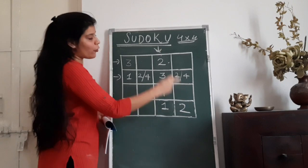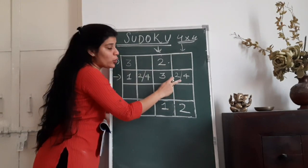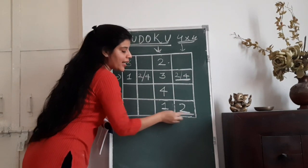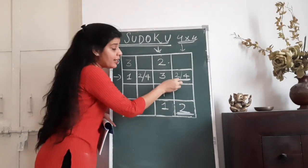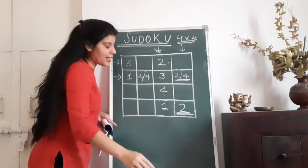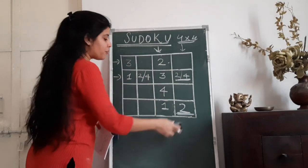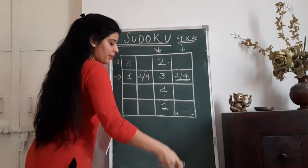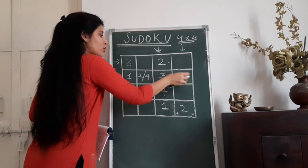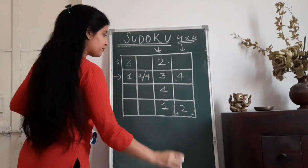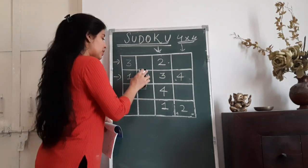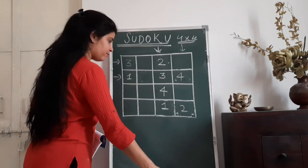But now look at the fourth column. Can I have 2 here? No, I cannot have 2 here. Why can't I have 2 here? Because 2 is already in the fourth column, and if I put 2 here, then 2 is going to repeat itself in the fourth column and we can't do that. So 2 will not come here, and therefore the number which will come here is going to be 4.